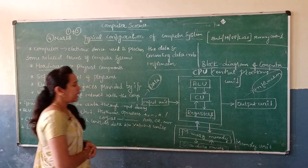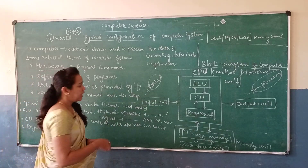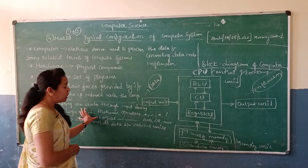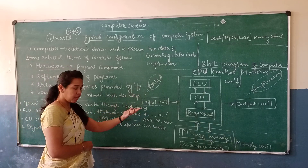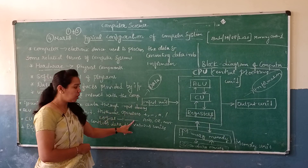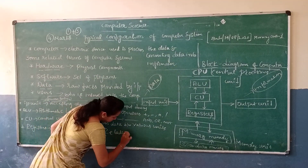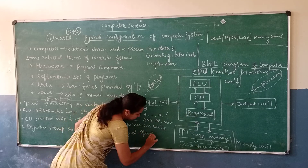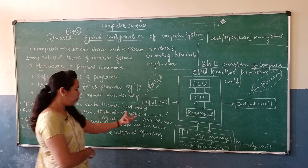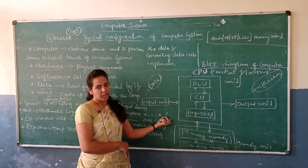Coming to ALU — ALU means Arithmetic Logic Unit. In this unit, operations are done. Which kind of operations? Arithmetic operations, logical operations, and relational operations. Arithmetic operations include addition, subtraction, multiplication, and division.